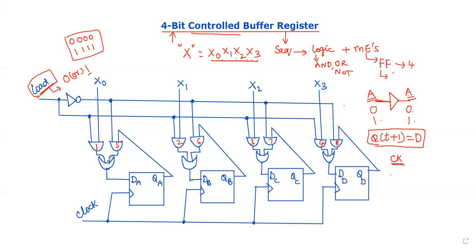We apply the output of an OR gate, and all the flip-flops connect with different outputs. Next, we have two connections based on load. When load equals 1, normal operation is performed. When load equals 0, the complemented or stored operation is performed.